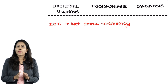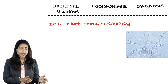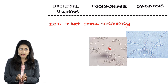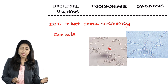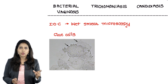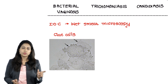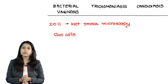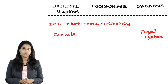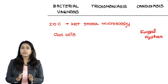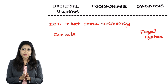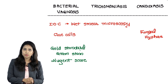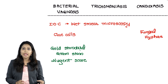Coming to the investigations, wet smear can be used to differentiate all of these. In candidiasis we can see the fungal hyphae, in trichomonas we can see the trichomonas parasite, whereas in Gardnerella vaginalis it has the typical clue cells. Clue cells are very important and are seen in bacterial vaginosis — basically the vaginal epithelium studded with bacteria. If they ask the investigation of choice it is wet mount, but the gold standard is gram staining in bacterial vaginosis, which uses the Nugent score.